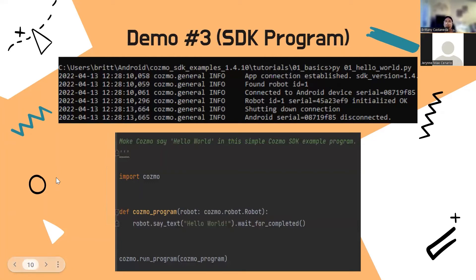For demo number three, we're going to be using the SDK program instead of the built-in application. SDK stands for Software Development Kit. For our SDK, we're going to be using the command prompt and PyCharm, which is a Python IDE. First, we use our COSMO application and turn it into SDK mode. After enabling that, we go into our command prompt and access the files that use Python to make COSMO move or do something. For this case, we're going to do a hello world program. The bottom image shows this program making COSMO say 'hello world' in this simple COSMO SDK example. Here we see the Python language being used, and in the next slide we will see COSMO say hello world.